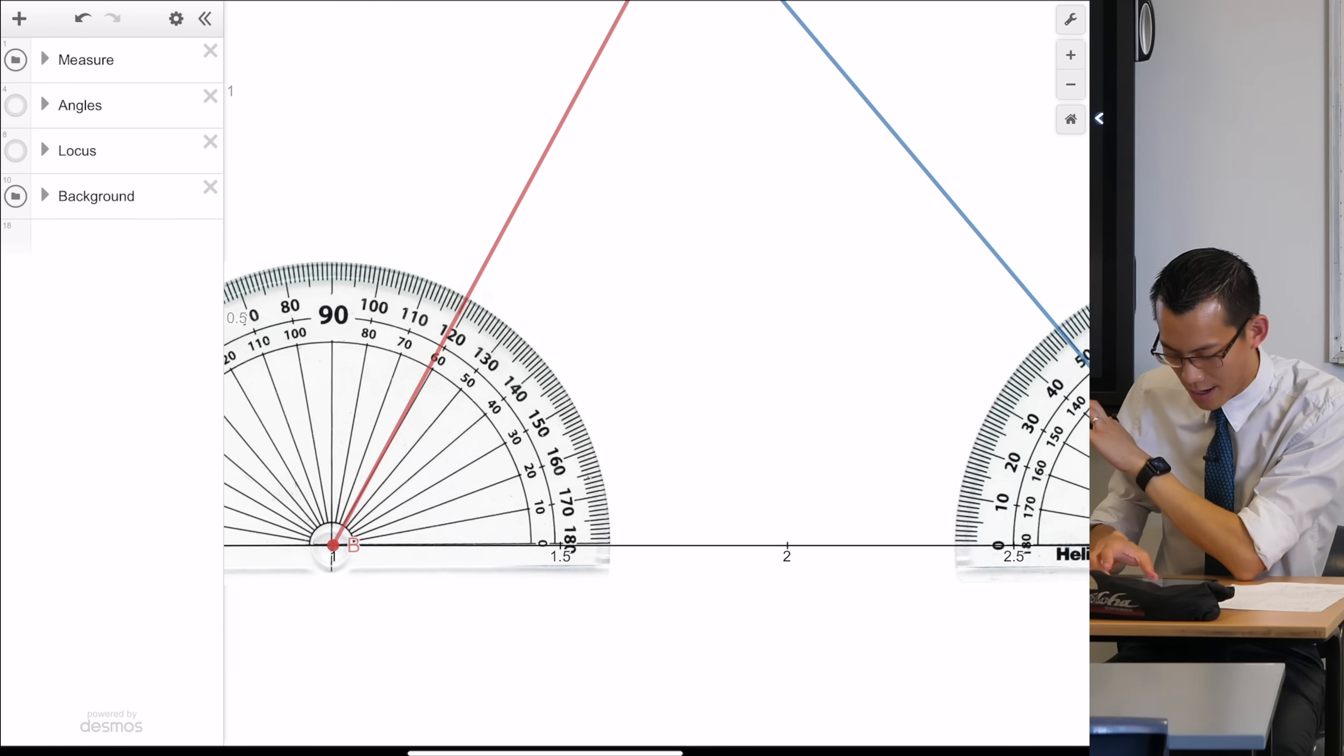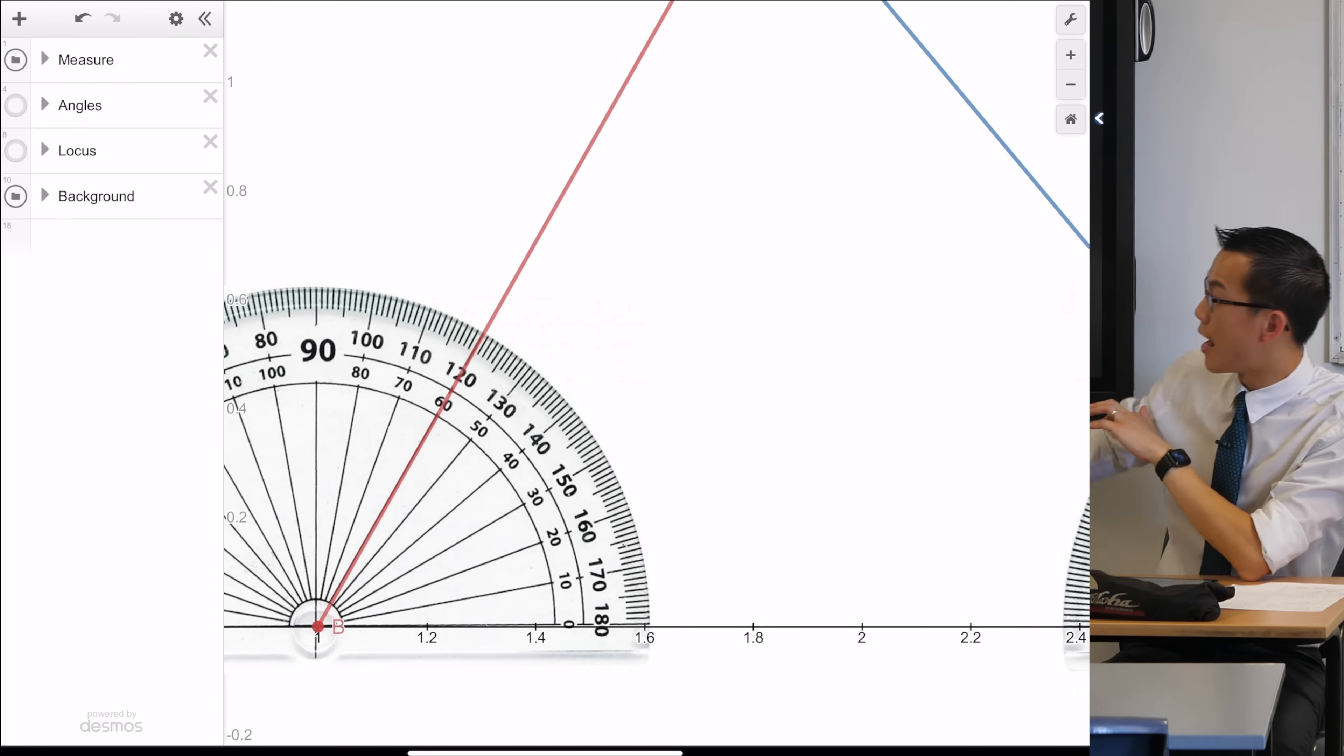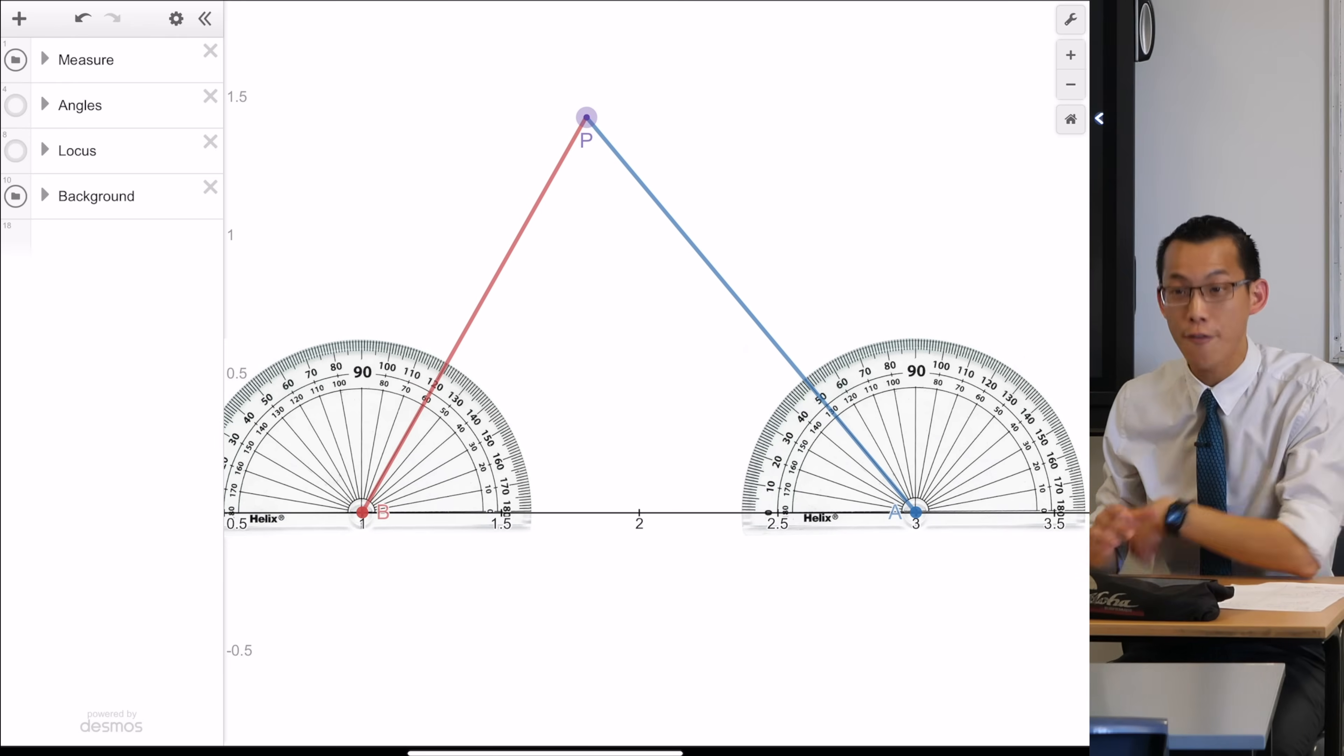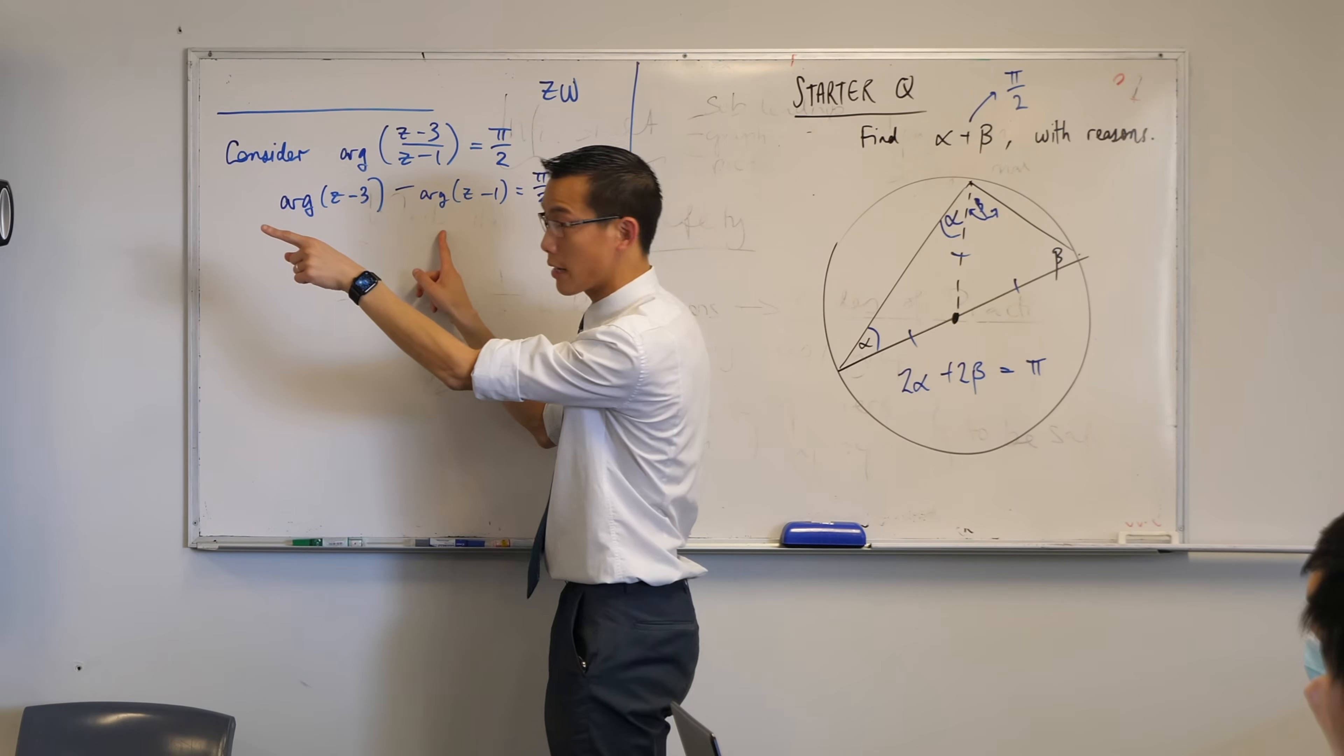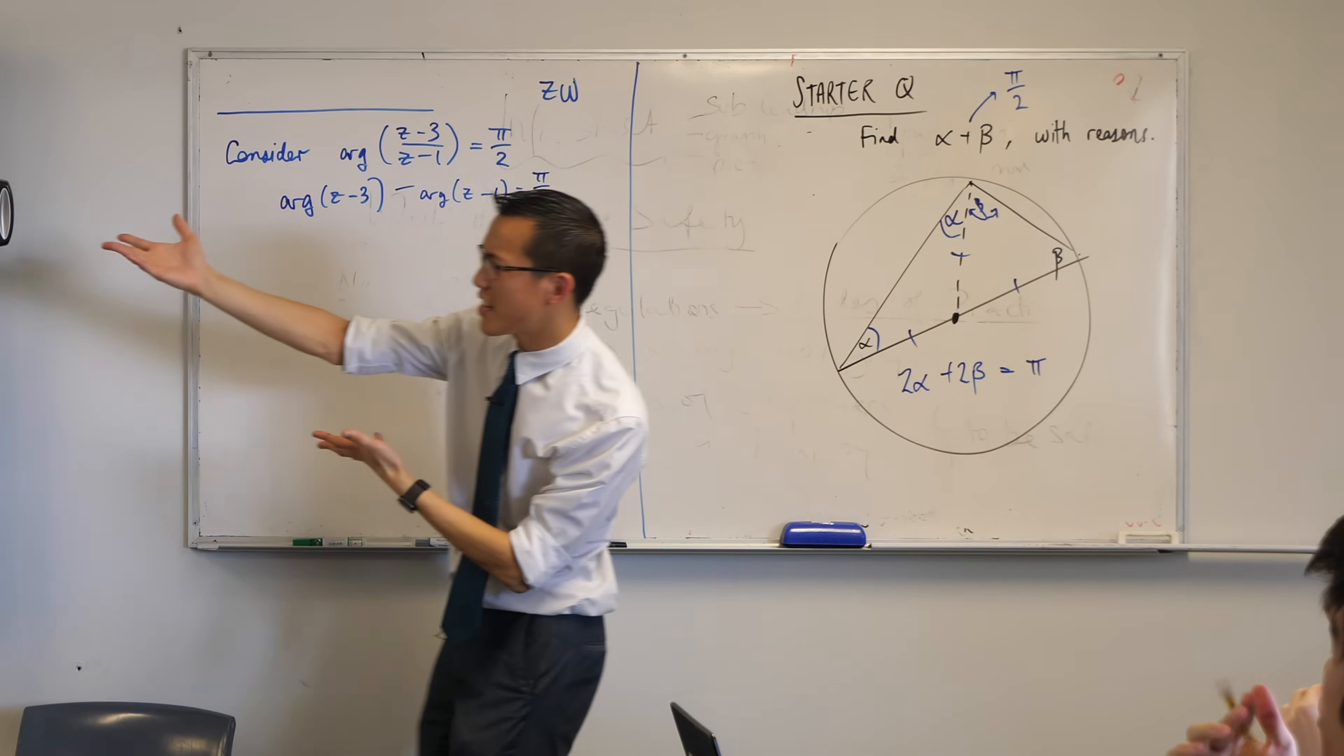If I come over to my other protractor, I've got argument of z minus one over here on the left-hand side. Just reading the protractor, what's that angle? That's 60 degrees. Now I've got both in degrees. If I were to take the difference, one angle take away the other, 130 take away 60, that's 70 degrees. Is that pi on two? No, it is not. So this particular point that I've chosen doesn't satisfy the equation.